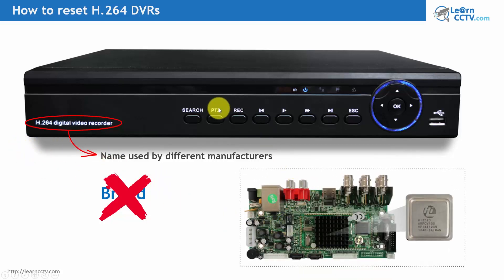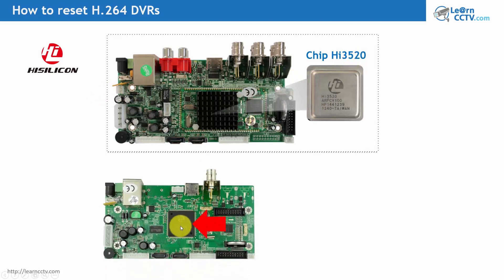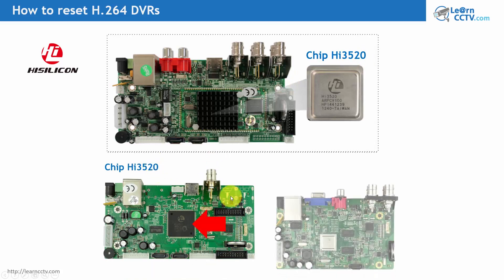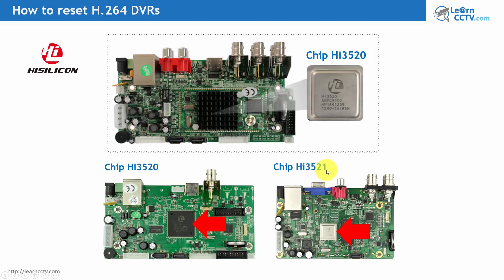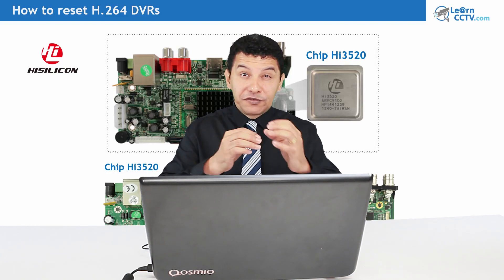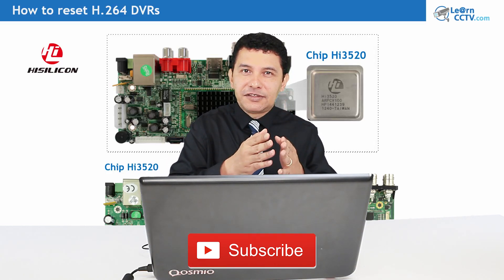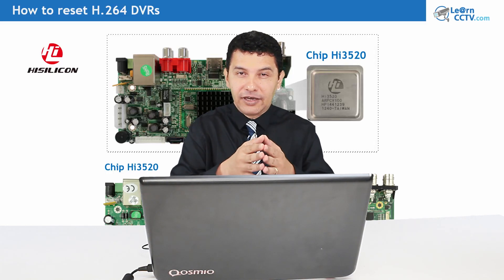Those DVRs have a board with a chip on it, and this chip is manufactured by a company like HiSilicon, for example. HiSilicon manufactured this chip and placed it on the board. You can see different boards with different chips, like the 3520 and the 3521. Many DVRs around the world use those kinds of chips. So if your DVR uses this chip, it can also work with the password reset.